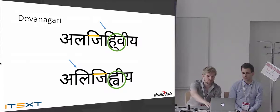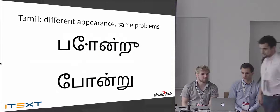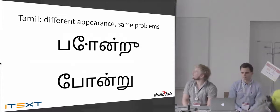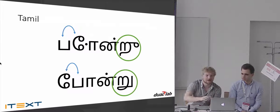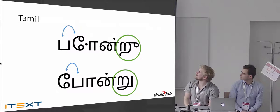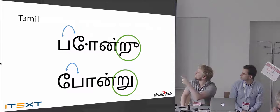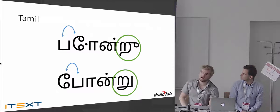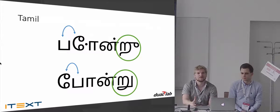The same thing happens for another Indic script, Tamil, from the south of India. It looks very different but the principle is the same: there are some substitutions and changes that need to be made. The first two characters are switched, the last character gets a big curl at the end instead of on the bottom, and the little dots change position in the next-to-last character. These things cannot be handled natively using only Unicode — you have to use OpenType features.